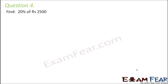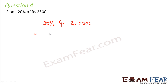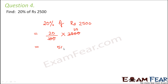Question number 4: Find 20 percent of rupees 2,500. So 20 percent is nothing but 20 out of 100, multiplied by rupees 2,500. 100 into 25 gives 2,500, so this would be 500. Therefore 20 percent of 2,500 is rupees 500.